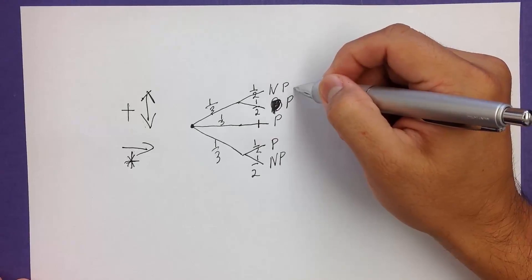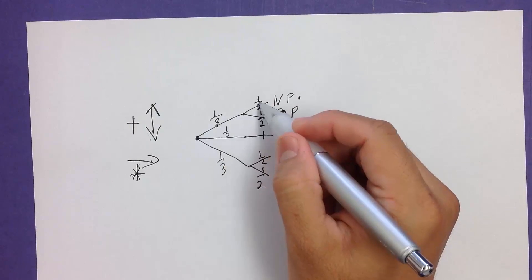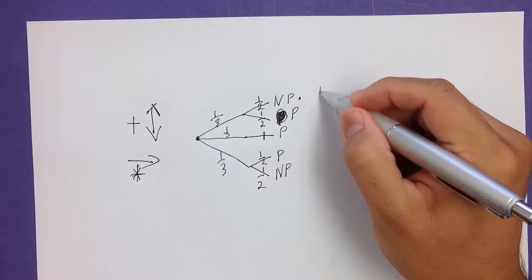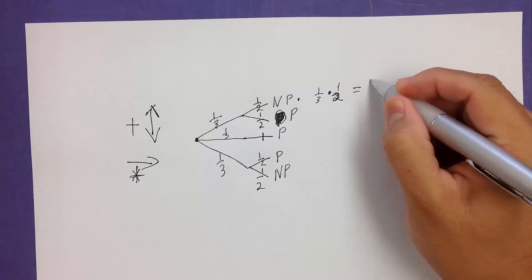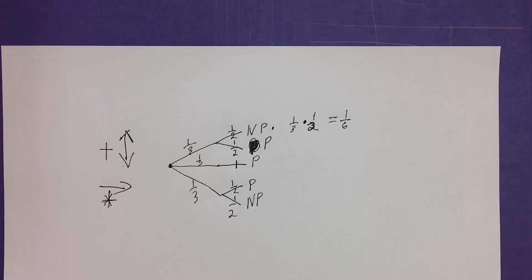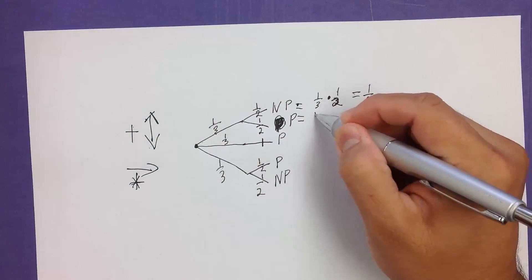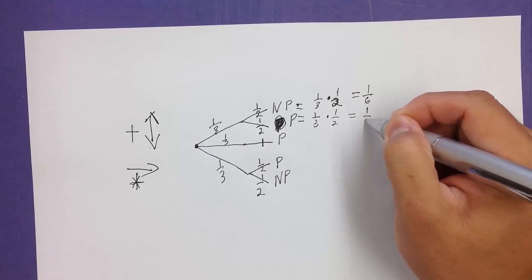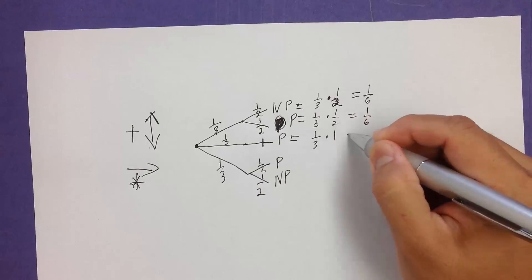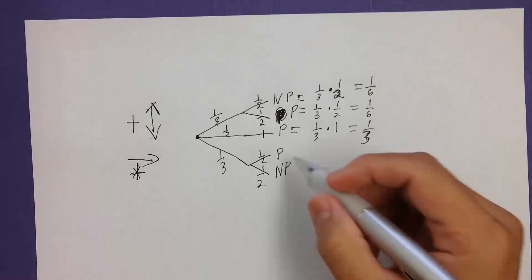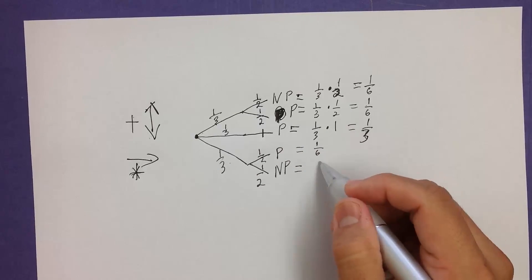To find the probability of taking the upper path and then the upper sub-path (no pumpkin), that's one-third times one-half, which equals one-sixth. Going the upper path then lower sub-path is also one-third times one-half, equals one-sixth. The middle path is one-third times one, which equals one-third. The lower path branches: one-third times one-half is one-sixth, and one-third times one-half again is one-sixth.